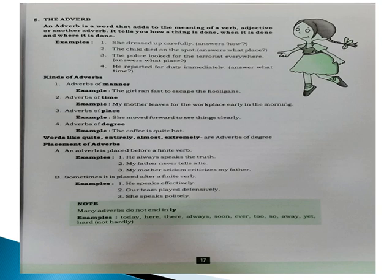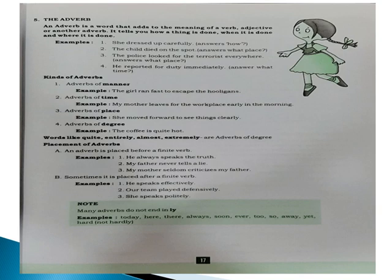From 'Get Going Grammar' book, page number 17 — the adverb. An adverb is a word that adds meaning to a verb, an adjective, or another adverb in the sentence. So the three functions of an adverb are: it adds meaning to a verb, an adjective, and another adverb. It tells how the thing is done, when it is done, and where it is done. For example, 'dress up carefully' — 'carefully' is an adverb of manner, telling us how the action is done.